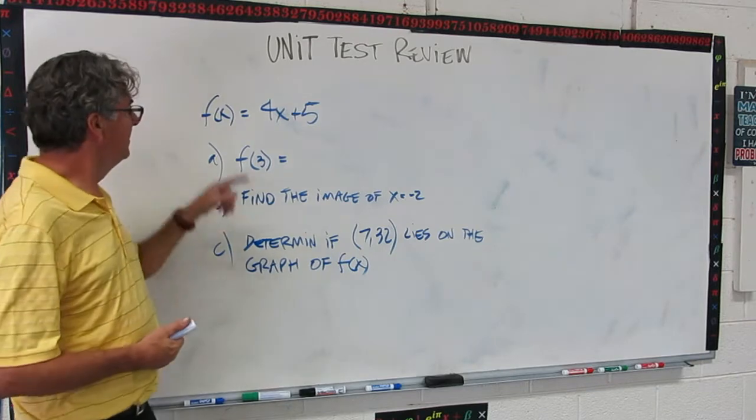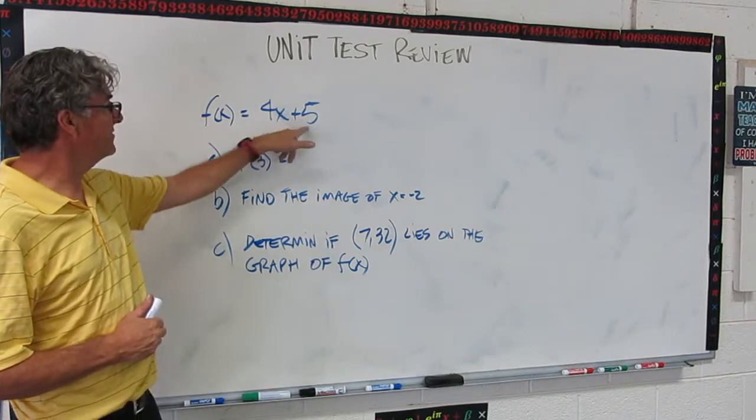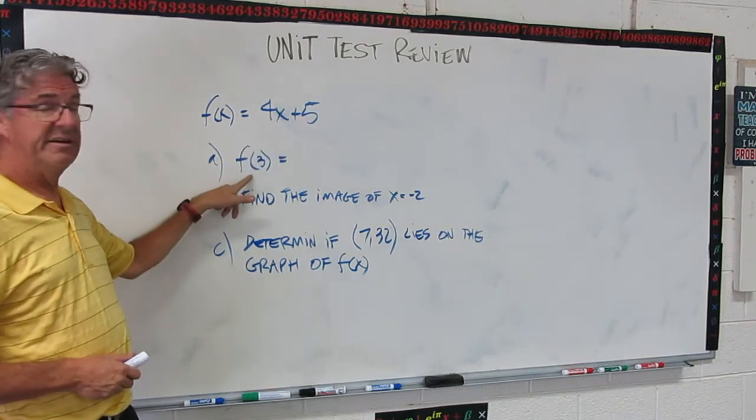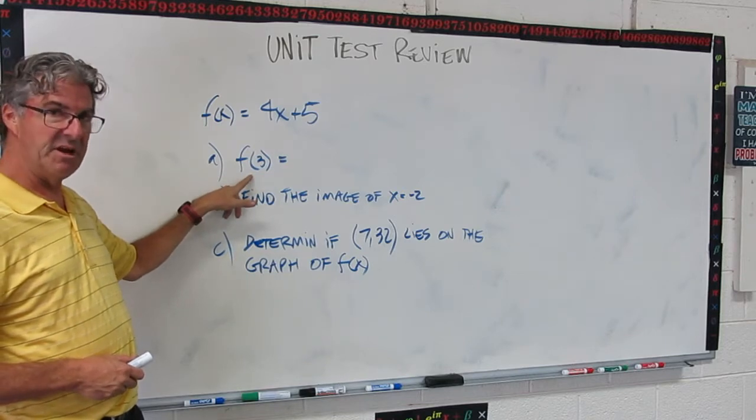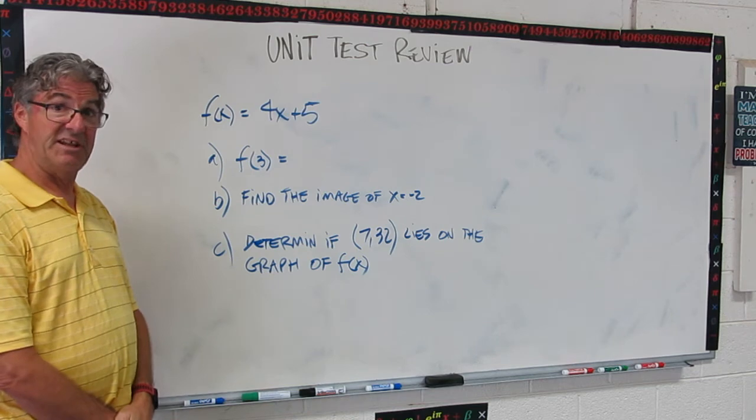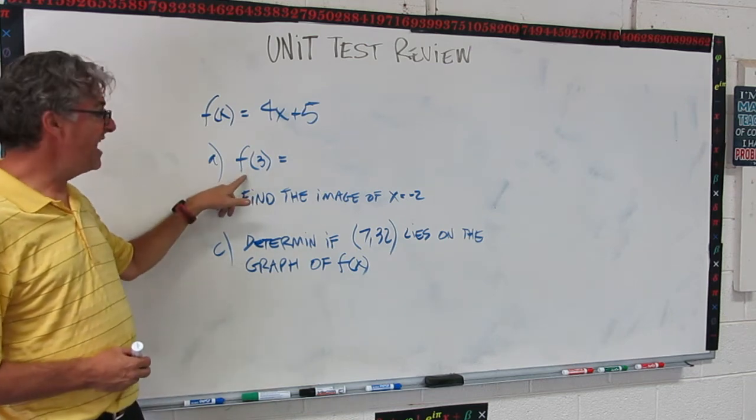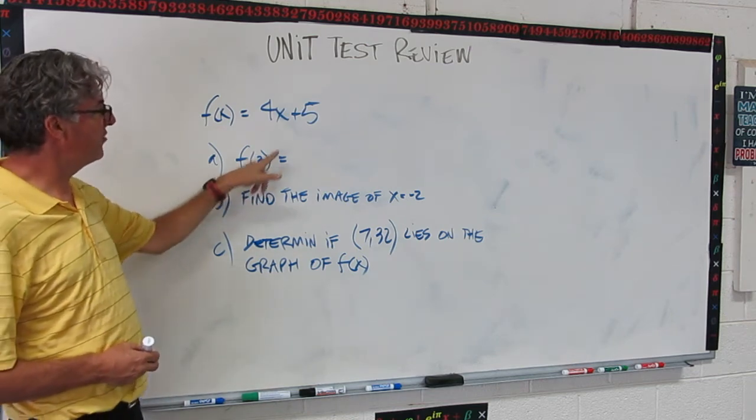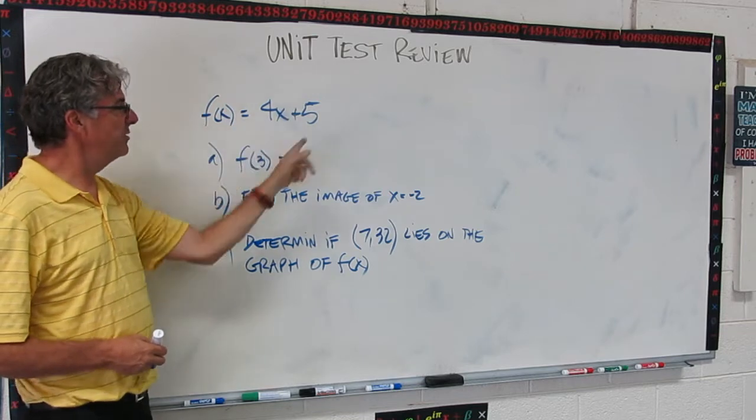Okay, here's another quick one. Here's my function, f of x equals 4x plus 5. A, do that. I'm not going to explain what it means first. Just do that. Come up with your answer. Okay, let's see how you did it. This means f of 3. It means put 3 in for x and figure out what this means.